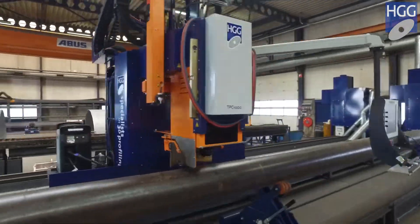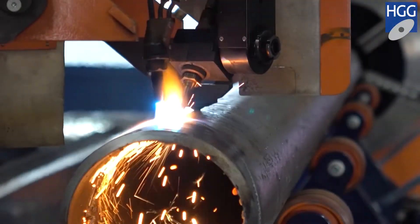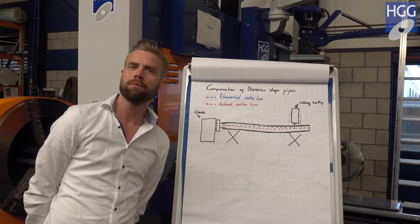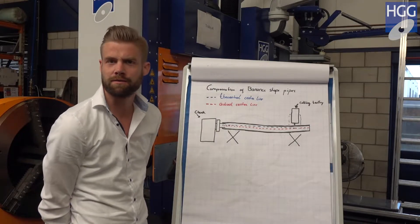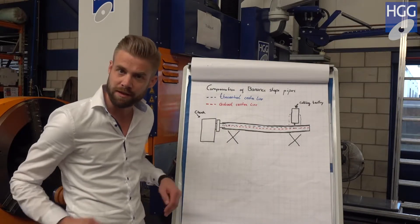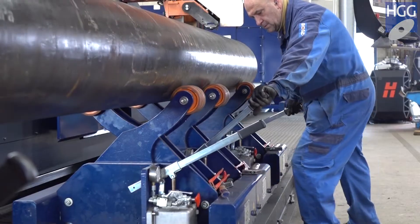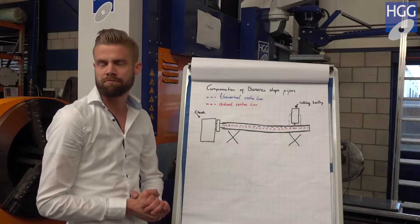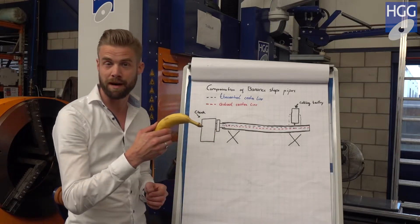Today we are standing in front of the HG SPC 1200 pipe cutting machine. This is the machine we sell the most. The reason being is because the machine is very flexible, very flexible in setup, because it uses pipe supports. Those pipe supports come handy when you are processing a banana shaped pipe.